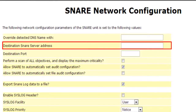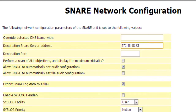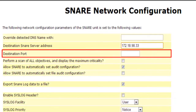For Snare to send the logs to the Event Log Server, mention the Event Log Analyzer server IP address in the Destination Snare Server address field. Next, we need to specify the port through which the server listens for the logs. Event Log Analyzer uses port number 513 and 514 as the default port. Hence, you can specify the destination port as either 513 or 514.